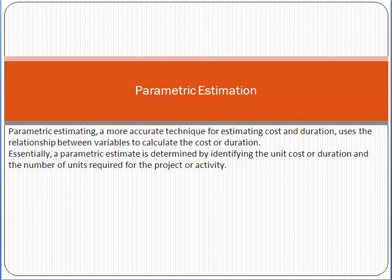Parametric estimation. First of all, we have to understand what is actually estimation. As a project manager, you have to do lots of estimation — how much time is required to complete a project, how much cost will be required. You divide the scope into small activities so that you can do the estimation: how much time and cost is required to complete each activity.